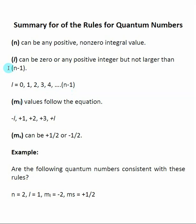m sub L is determined by L. It starts at minus L, and you keep adding one until you get to positive L. And m sub S can either be plus one-half or minus one-half — it's just one of those two values.